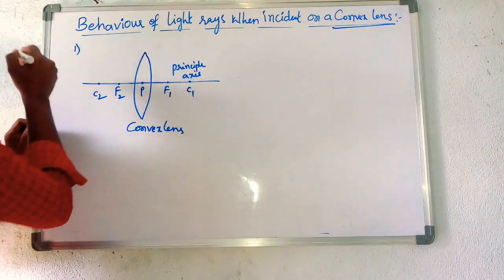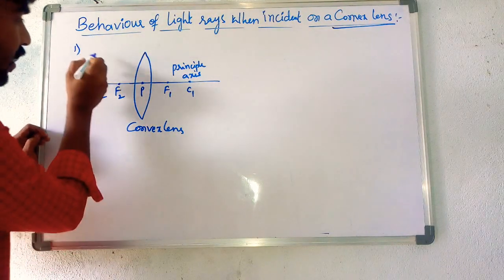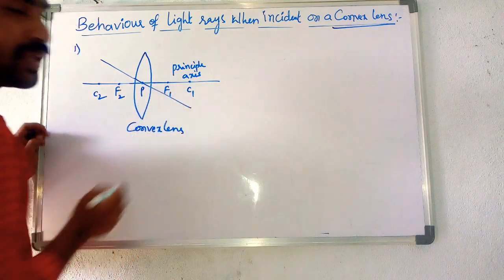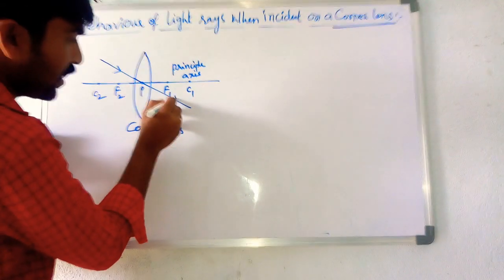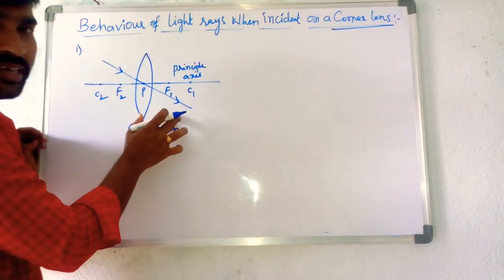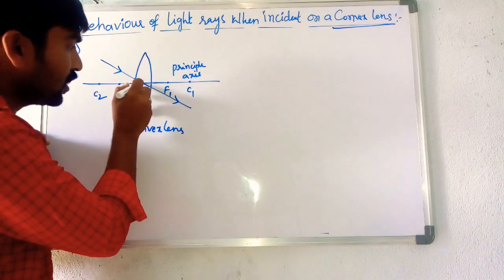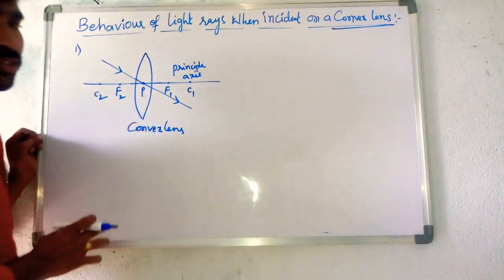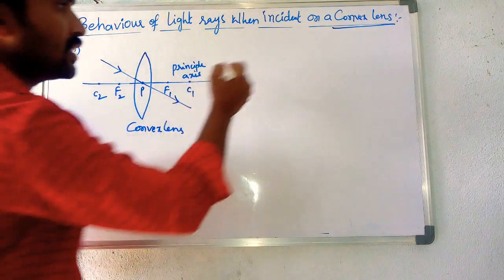What is the first rule in the behavior of light? When the light ray is incident on the optic center, it is undeviated — it does not deviate into another medium. This is the first rule when a ray is incident on a convex lens.